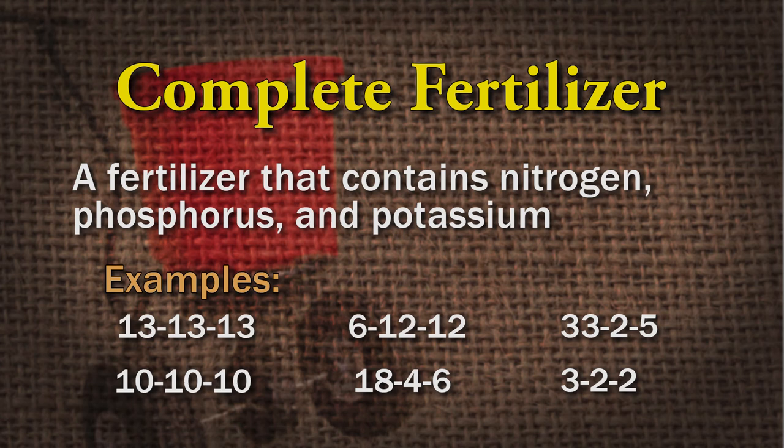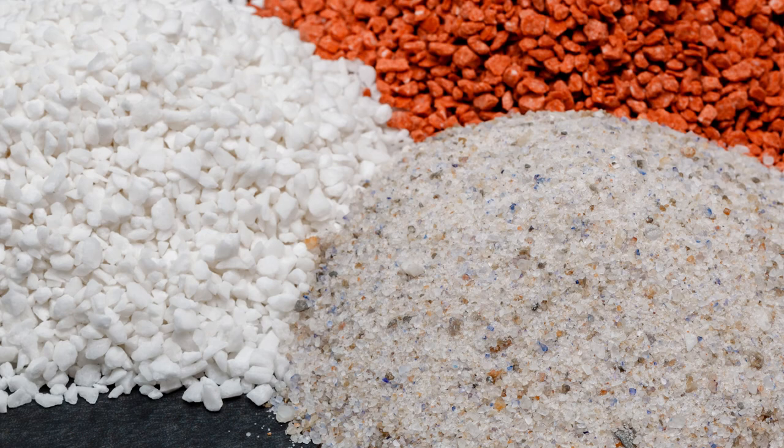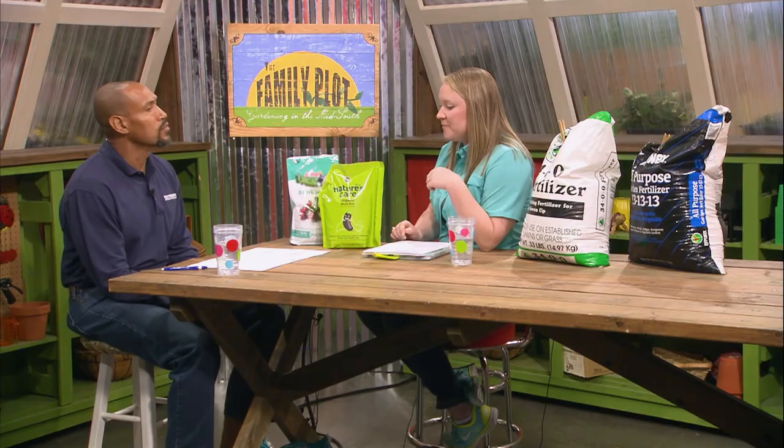There are other ways to categorize fertilizers — you could categorize them as slow release or fast release. The bags on the table would be considered fast release fertilizers; they release their nutrients over a two to three week period and usually look kind of like crushed rock. Slow release fertilizers come in a form called a prill — a small, smooth, round ball — and release their nutrients over a two to three month period. Osmocote would be an example of a slow release fertilizer.